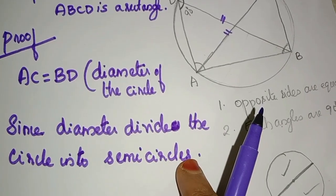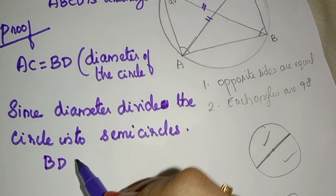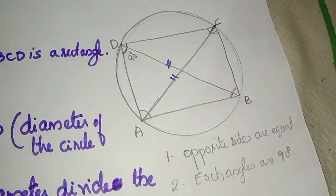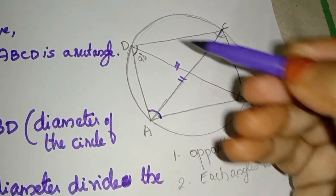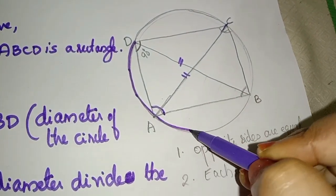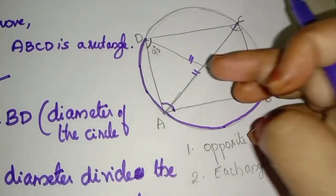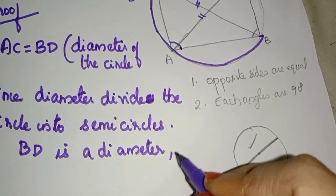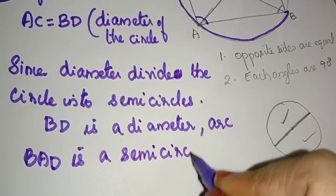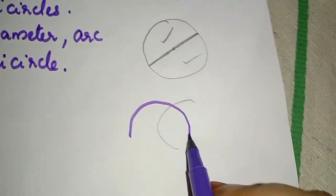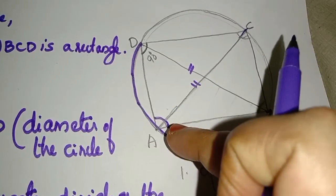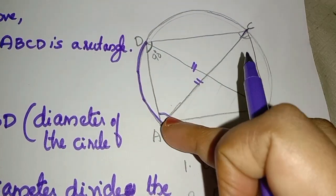BD is a diameter, arc BAD is a semicircle. Therefore, angle BAD is equal to 90 degrees.